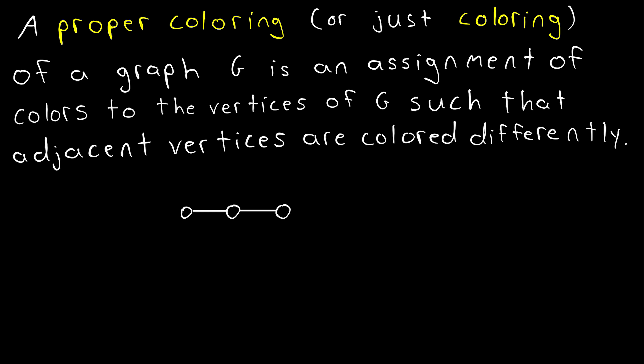A proper coloring, or just coloring, of a graph G is an assignment of colors to the vertices of G such that adjacent vertices are colored differently.